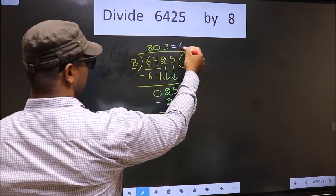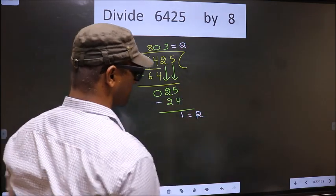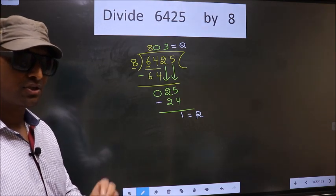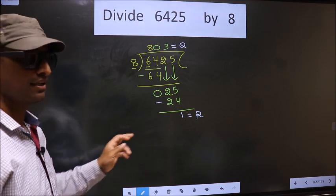Therefore, this is our quotient and this is our remainder. Did you understand where mistake happens? You should not do that mistake. Am I clear?